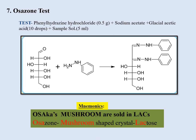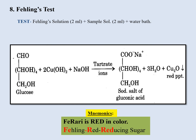Next is the osazone test. The mnemonic is 'Osazone's mushroom are sold in labs.' 'OSA' stands for osazone, 'mushroom' because the crystals you get in this test are in the shape of a mushroom, and 'LAC' stands for lactose. So in this test you get mushroom-shaped crystals confirming the presence of lactose.